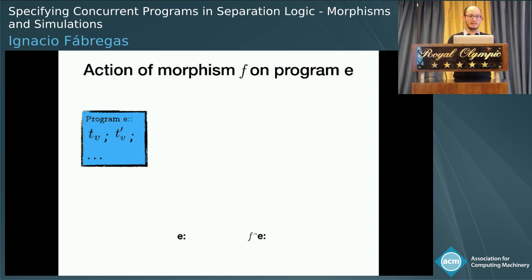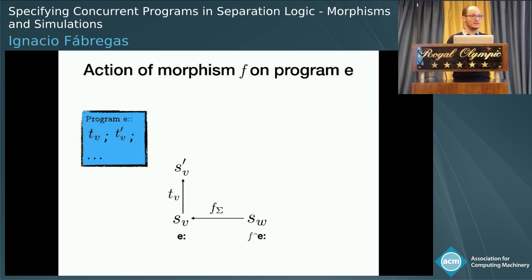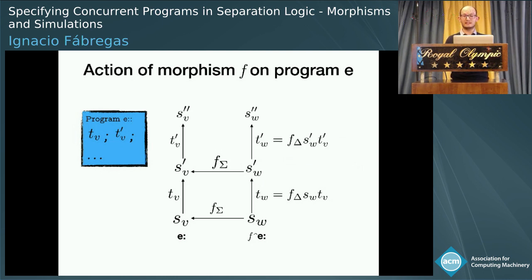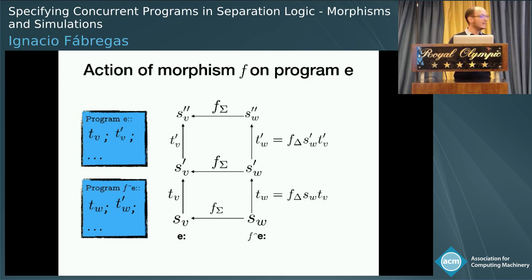We have a program E, which we can think of as some sequence of transitions in the resource. We want to compute the morphed program, F-E. We start with a state in W; the morphism gives us a state in B. There we know we have to perform transition T-b, and the morphism gives us which transition in W we will need to perform. This process is iterative — we continue with the next transition in B, get a corresponding transition in W, and so on, until we finish. From a program in resource B, we obtain a program in resource W this way.